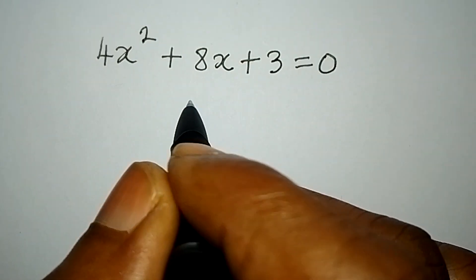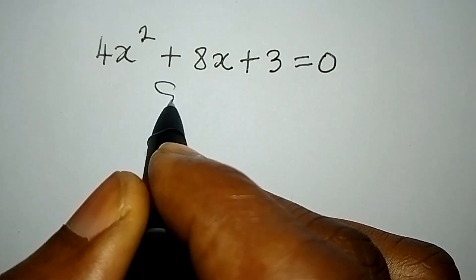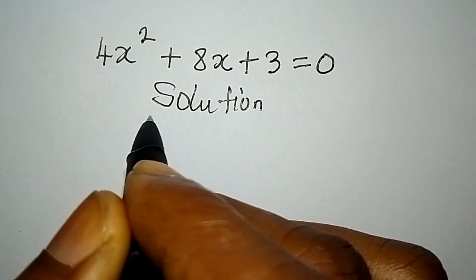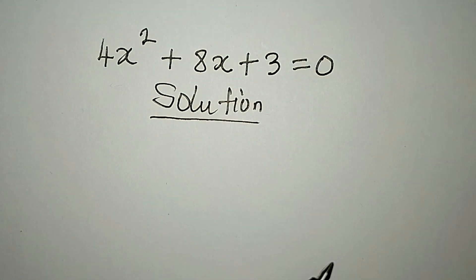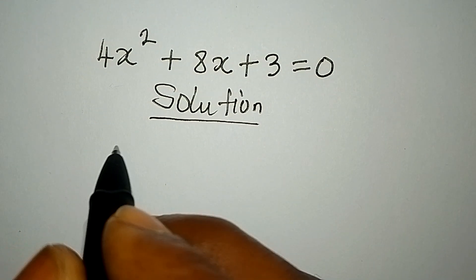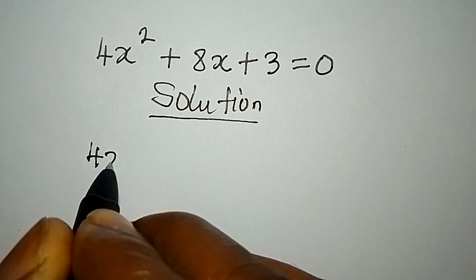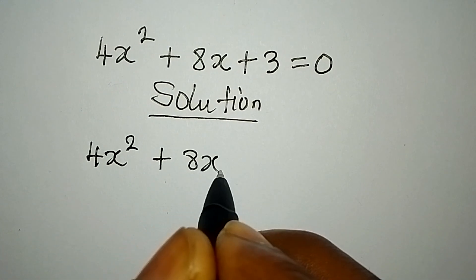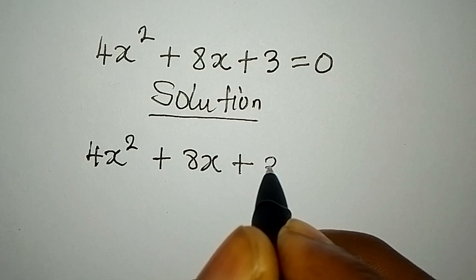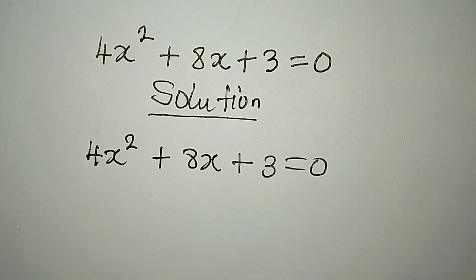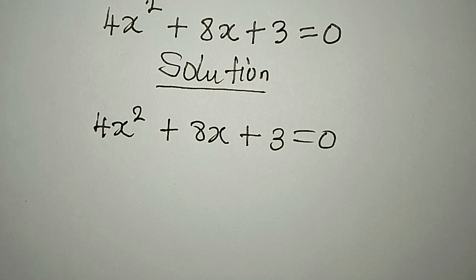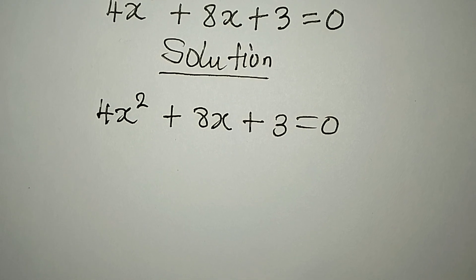Hello everyone. Let's solve this quadratic equation by using the completing the square method: 4x² + 8x + 3 = 0. I'm going to solve this completely, so pay attention if you have a problem with the completing the square method.